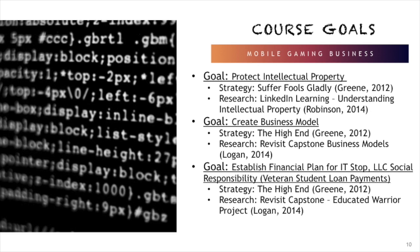In the Mobile Gaming Business course, I will pursue three goals: protect intellectual property, create a business model, and establish a financial plan for ITSTOP, my personal business. I'll use LinkedIn Learning's Understanding Intellectual Property to learn about the legal bounds of mobile gaming. I'll revisit my previous capstone business model and modify it for 2020. The financial plan for ITSTOP will draw on the Educated Warrior Project — a business model to pay back student loans for veterans who have not received the education they earned.